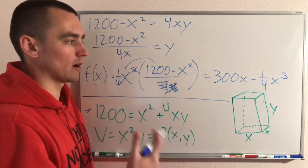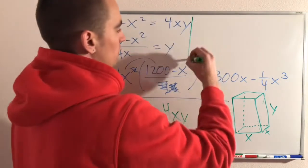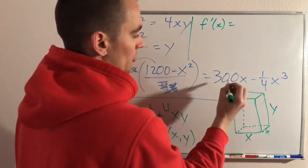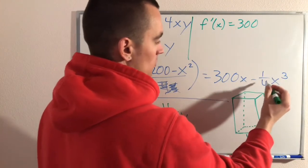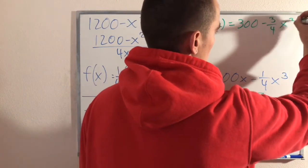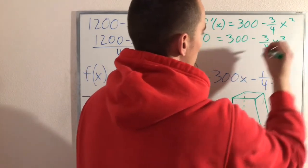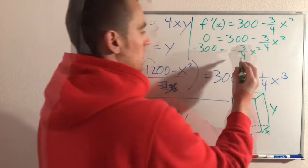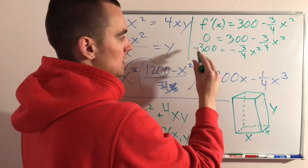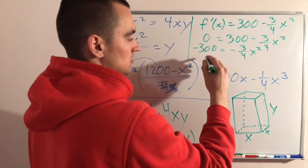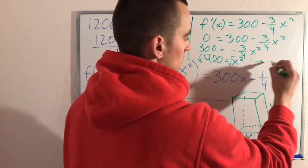Now we know this is the function we want to make as large as possible. To figure out where it's as large as possible, we need to find the critical numbers — take the derivative and set it equal to zero. Using the power rule, the derivative of 300x is 300, and the derivative of negative one-fourth x cubed is negative three-fourths x squared. Setting the derivative equal to zero: 300 minus three-fourths x squared equals 0. Multiplying both sides by negative four-thirds gives us x squared equals 400, and taking the square root gives x equals 20.